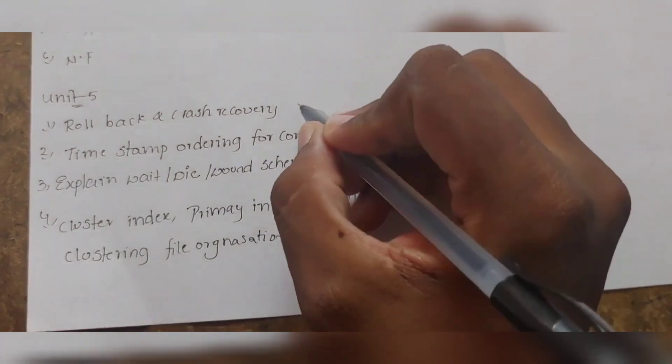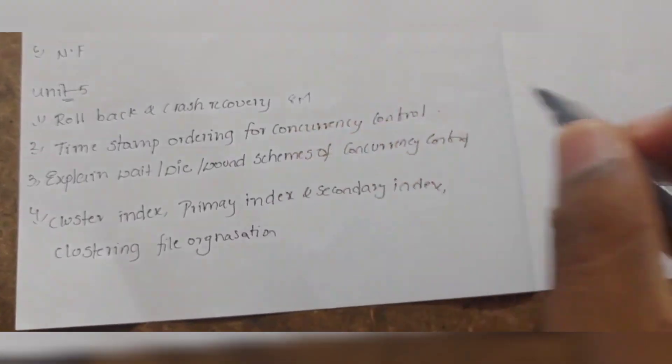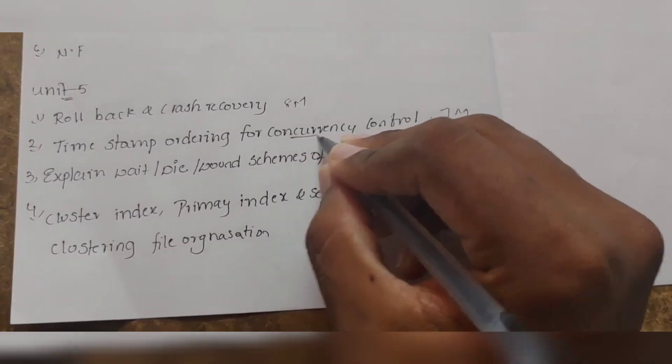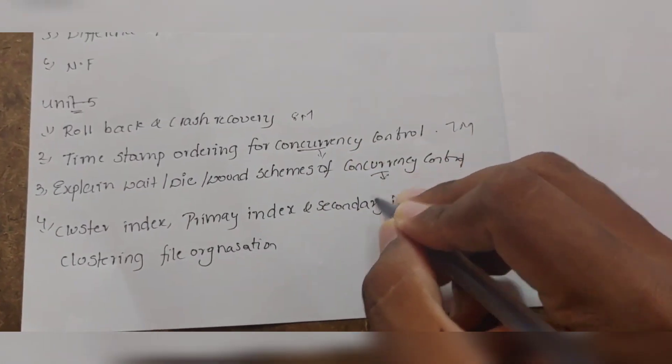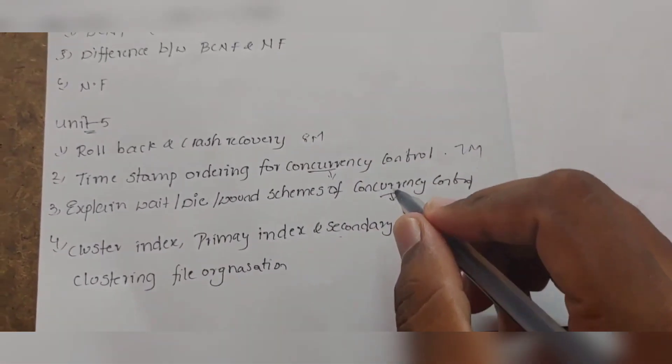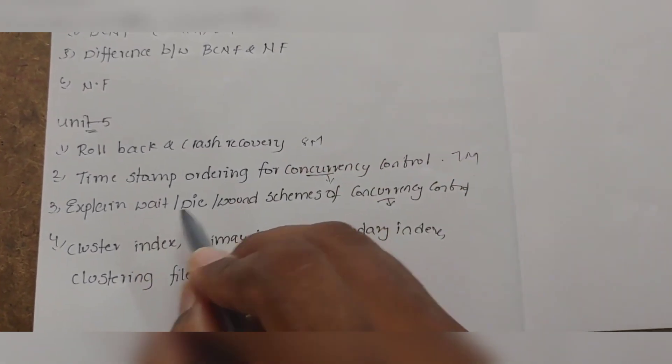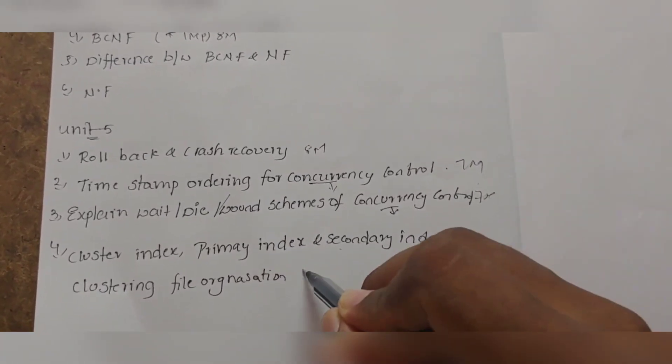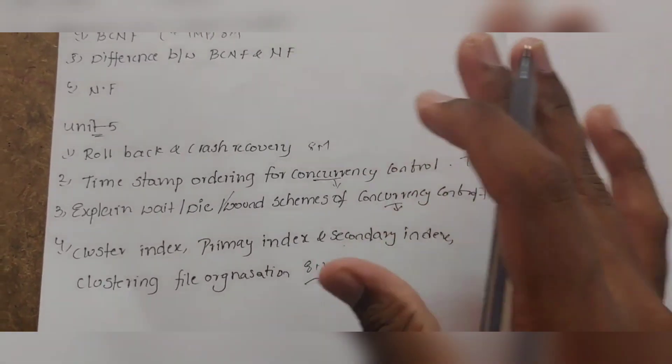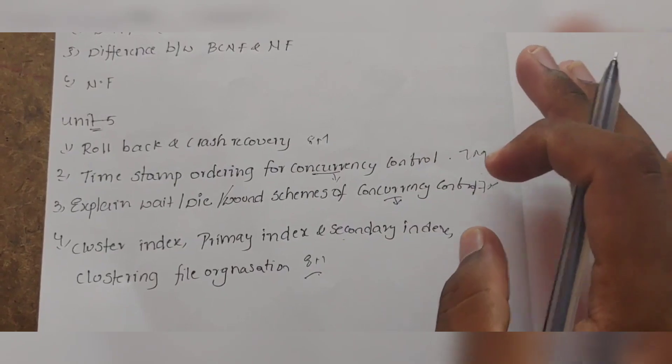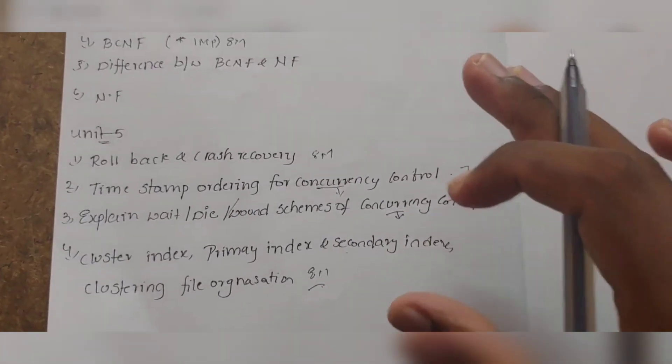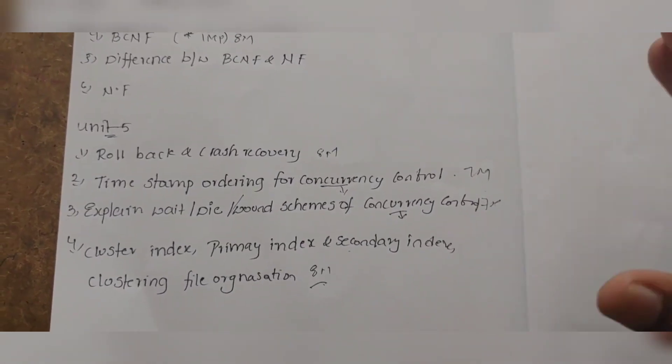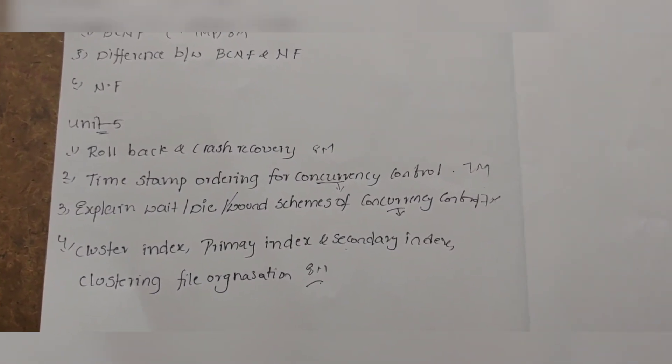Rollback and crash recovery is sure shot. Timestamp ordering for concurrency control. Different schemas of concurrency control - this is an important sub-topic. Cluster index, primary index, secondary index, clustering file organization - this is 7 marks for R20.